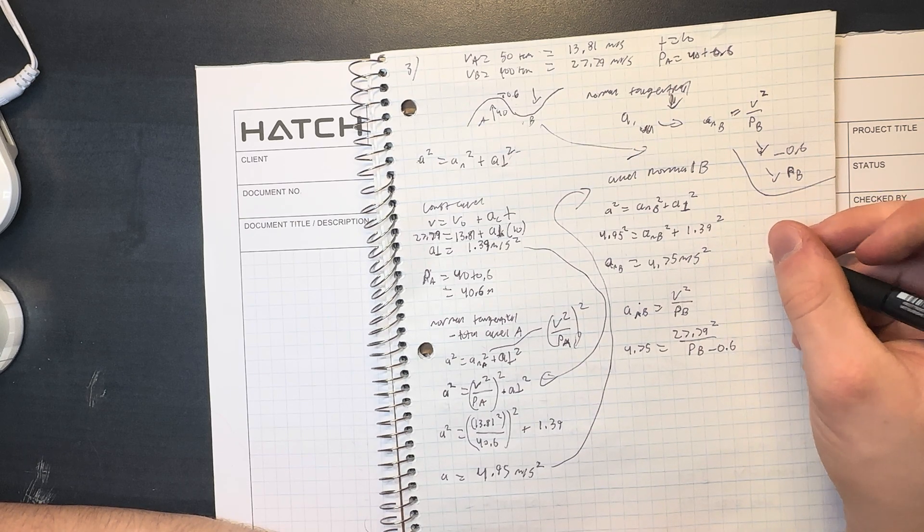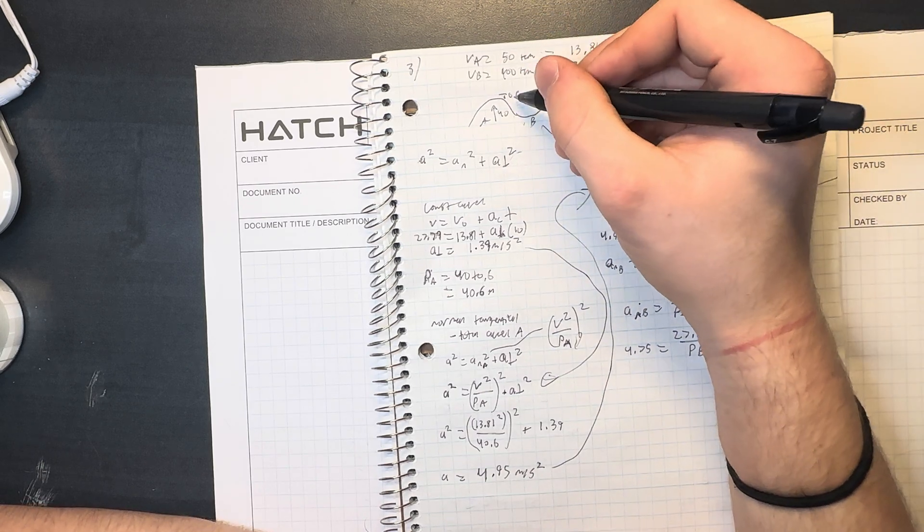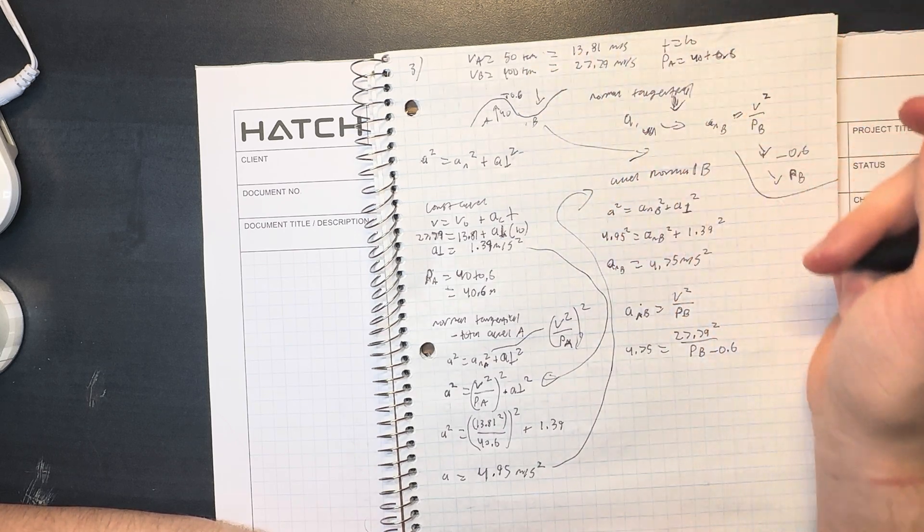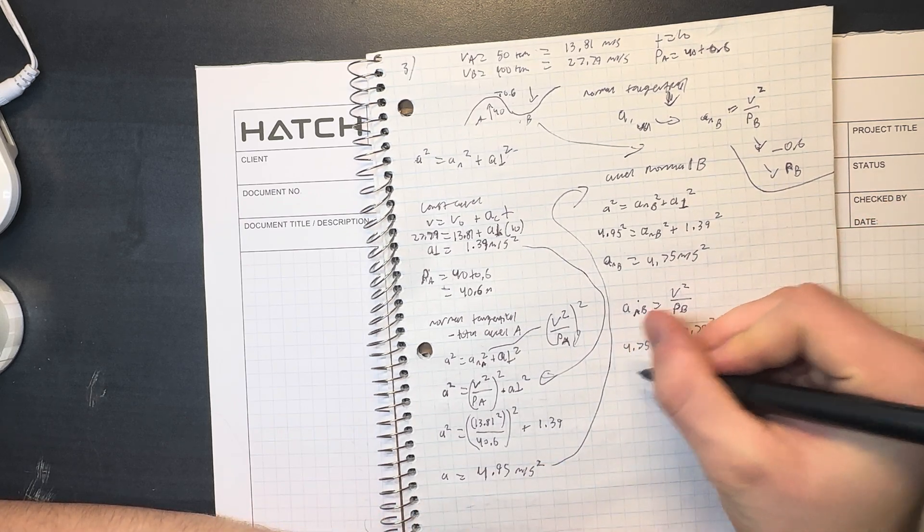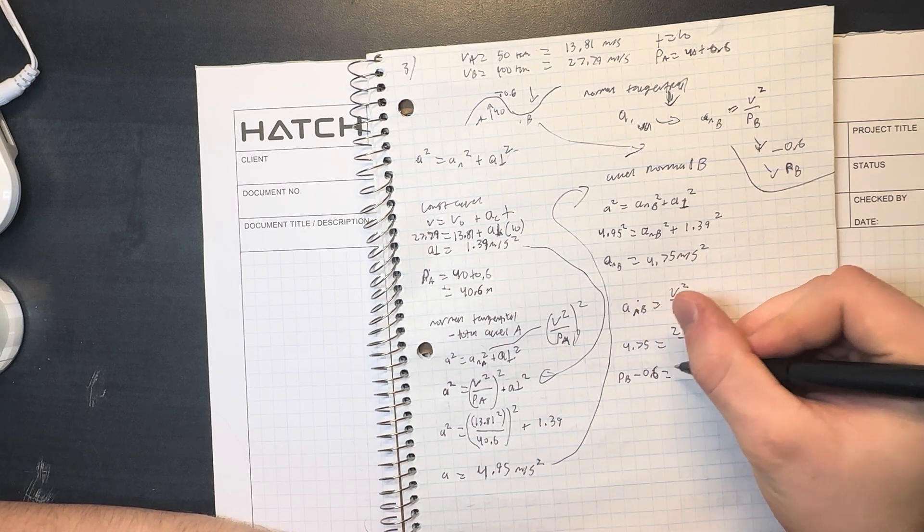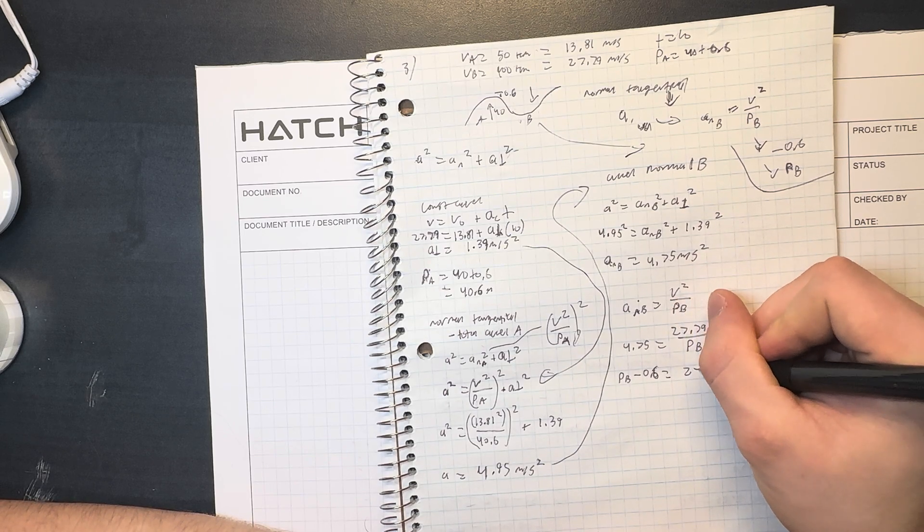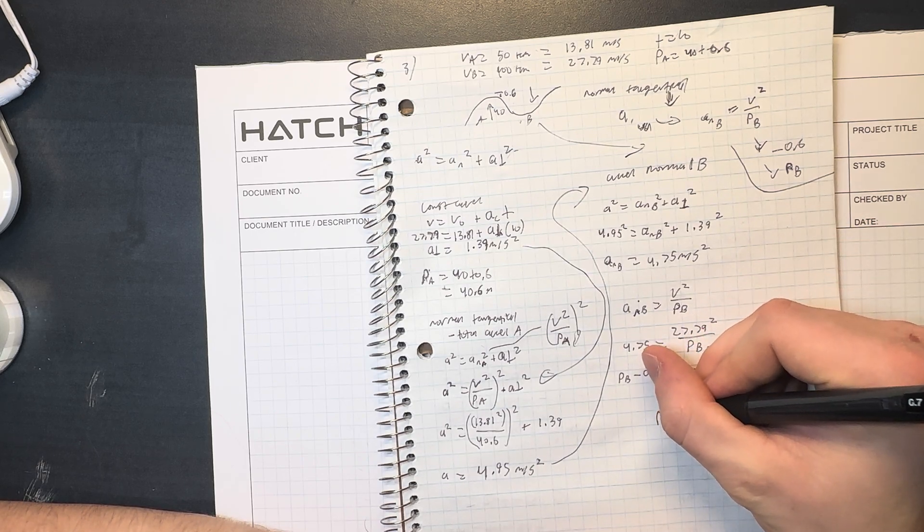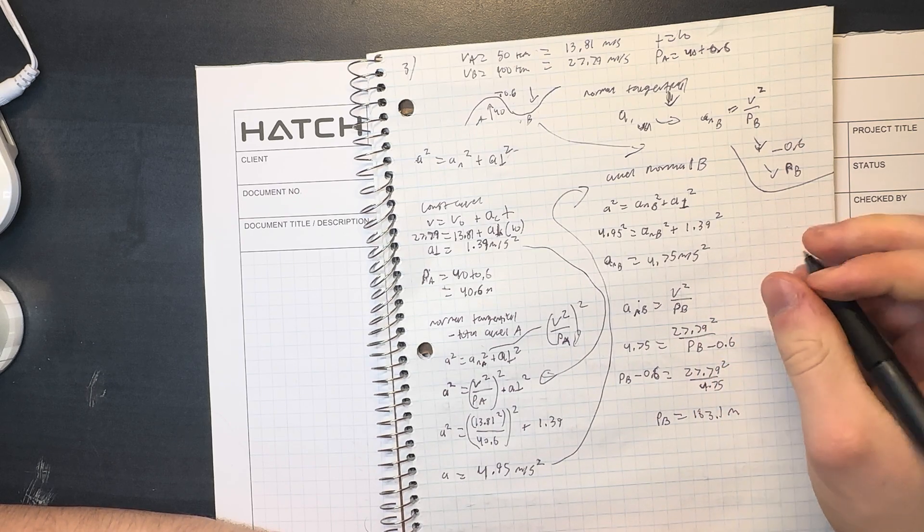To go backwards from the radius. So you know how we added 0.6 here, we have to get rid of it to find the actual radius of curvature. So minus 0.6. This gives us ρ_B minus 0.6 equals... so the radius of curvature of B is equal to 163.1 meters. Bam.